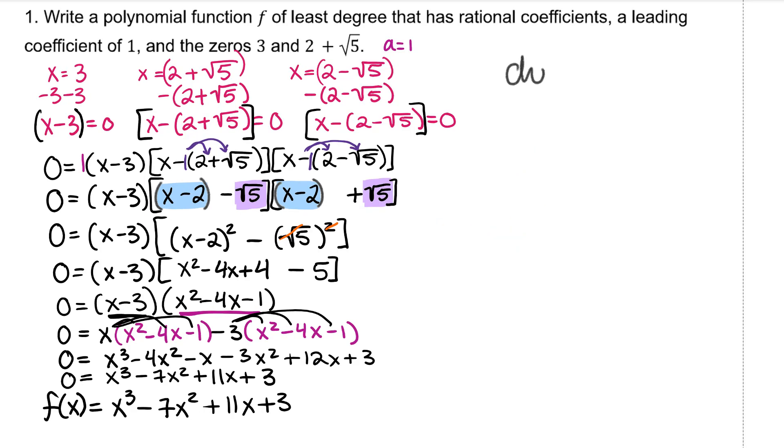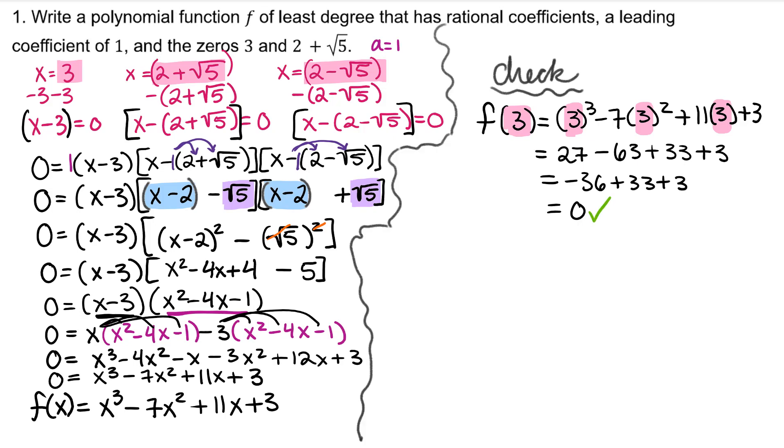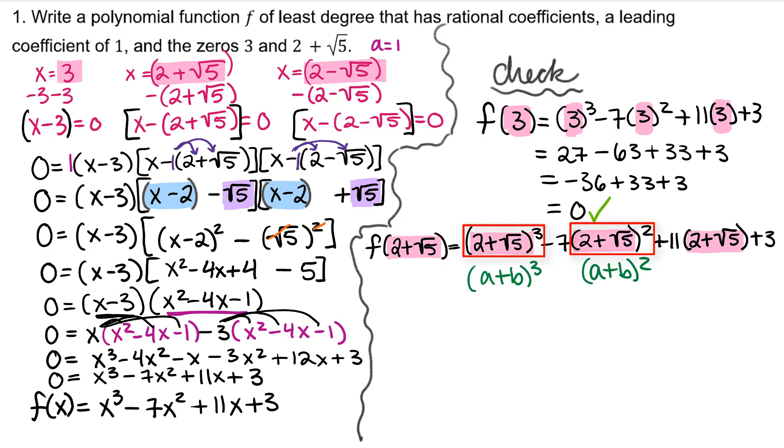To check our work, we can plug in each of the zeros into the polynomial to see if we get zero. And we can use binomial expansion to check these quantities.